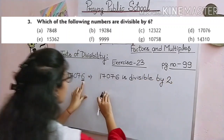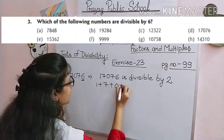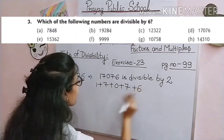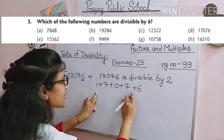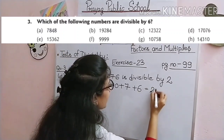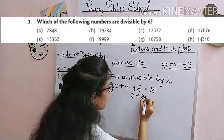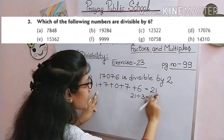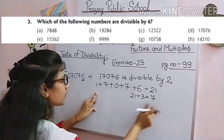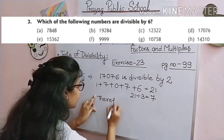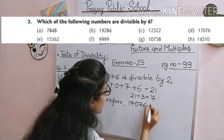Now we check whether this given number is divisible by 3. The digits of 17,076 are 1, 7, 0, 7, 6. Adding: 1 + 7 = 8, 8 + 0 = 8, 8 + 7 = 15, 15 + 6 = 21. Is 21 divisible by 3? Yes — 3 × 7 = 21. Therefore 17,076 is divisible by 3. Therefore 17,076 is divisible by 6, because the given number is divisible by both 2 and 3.